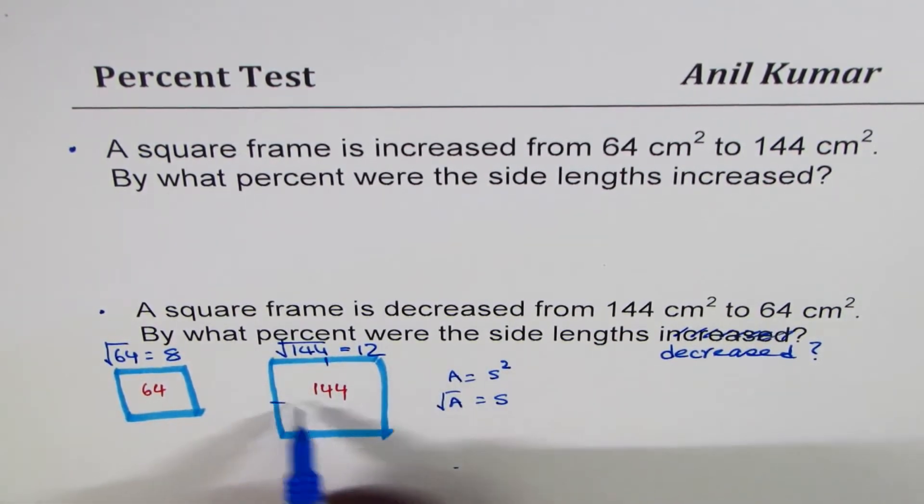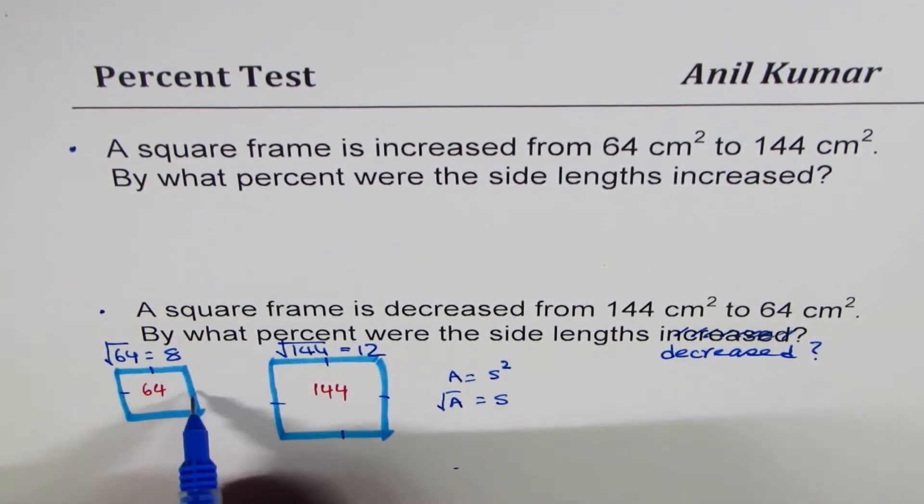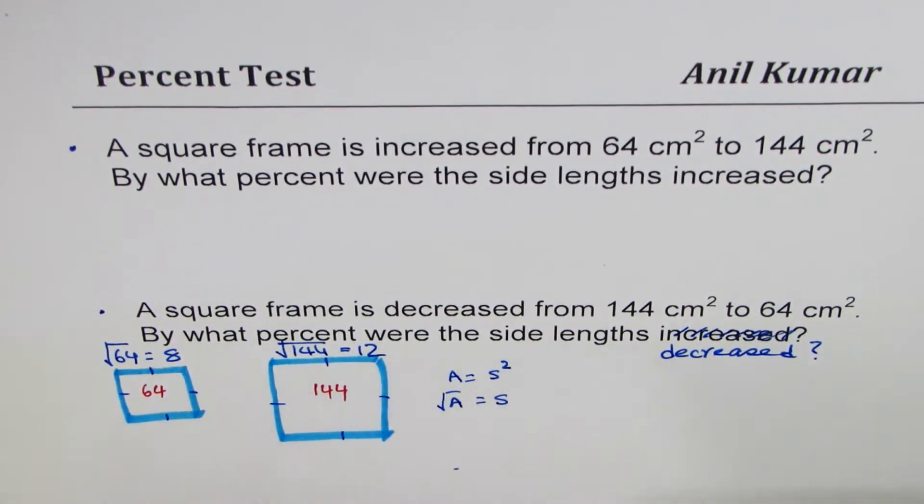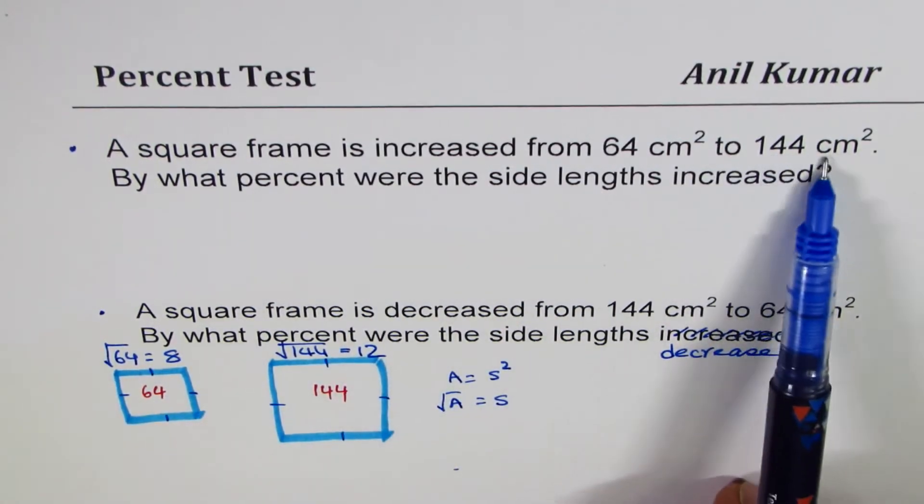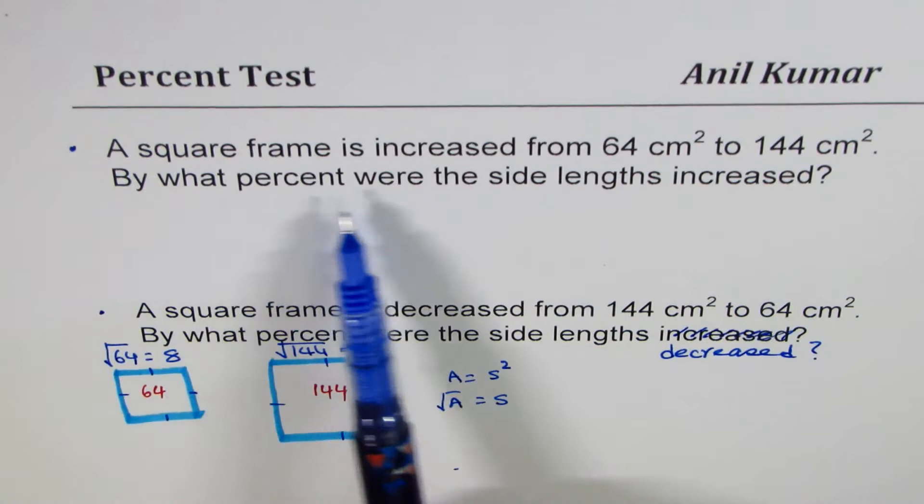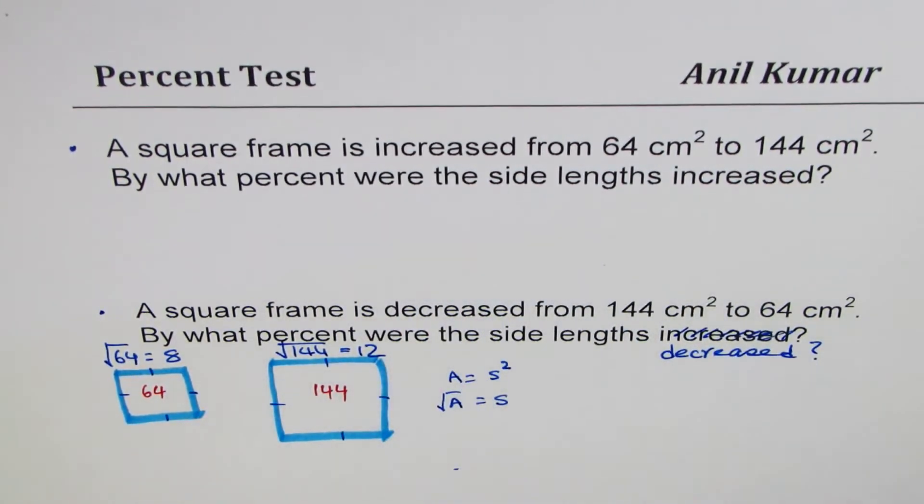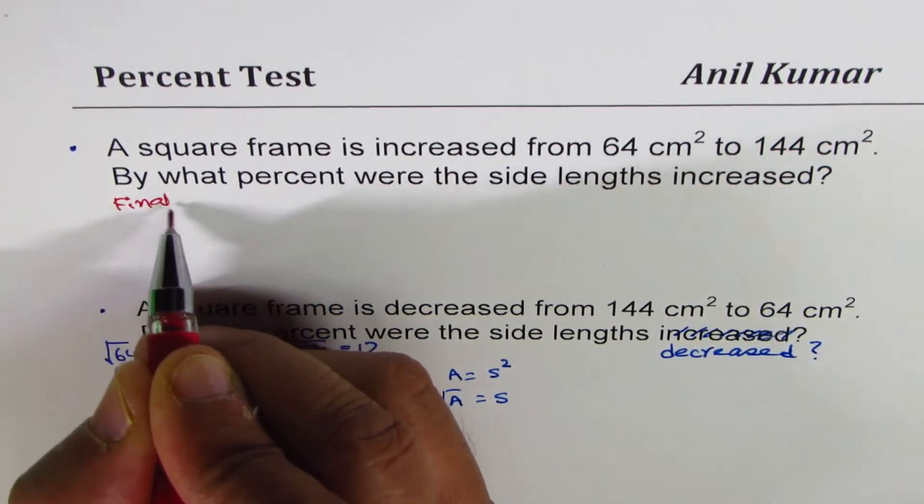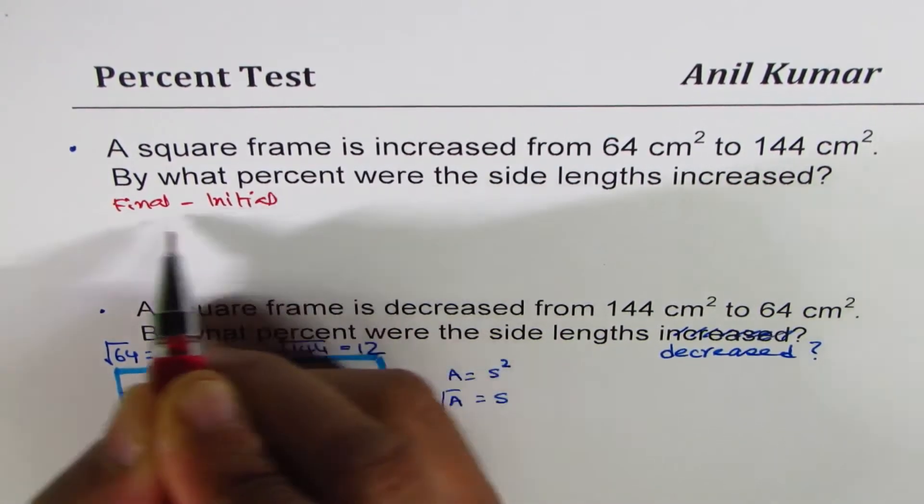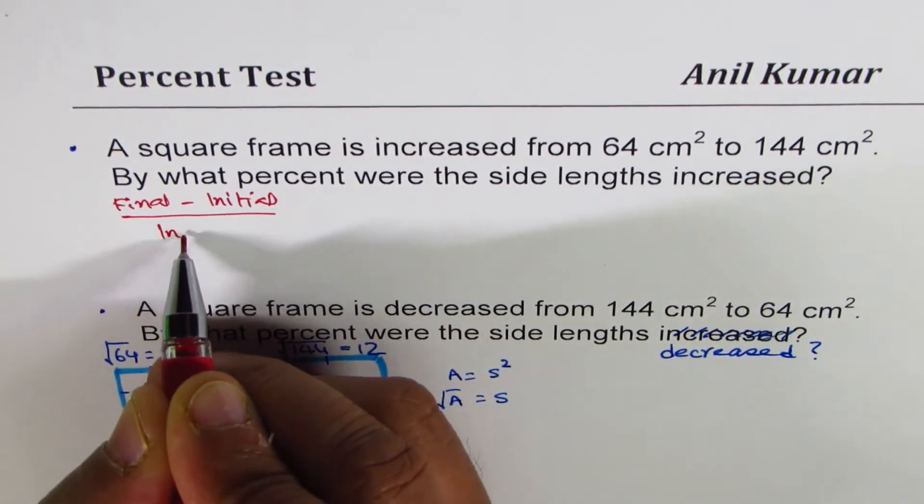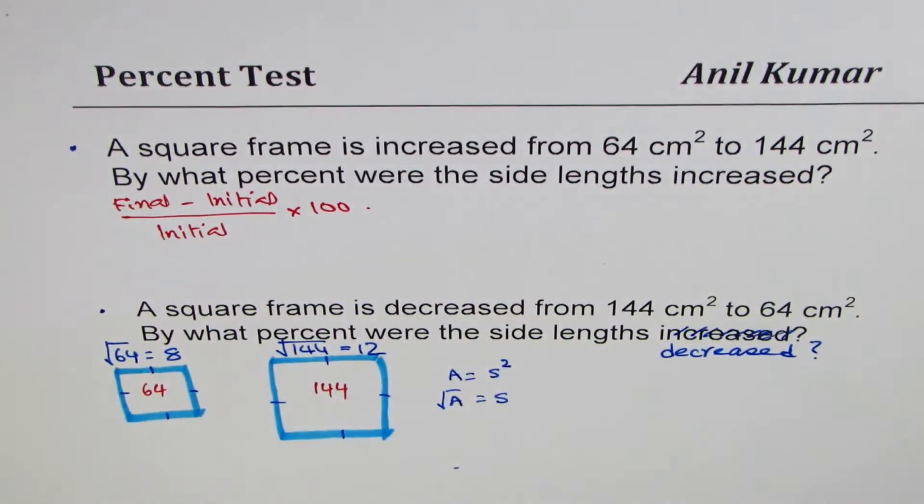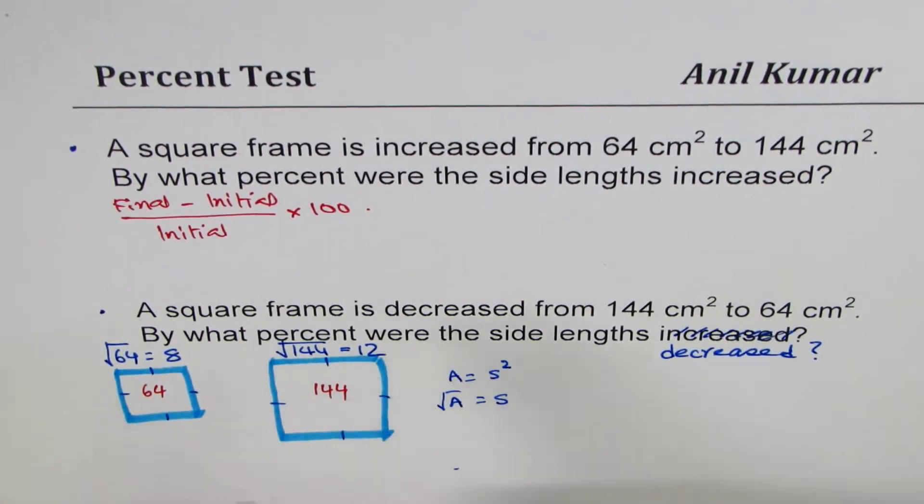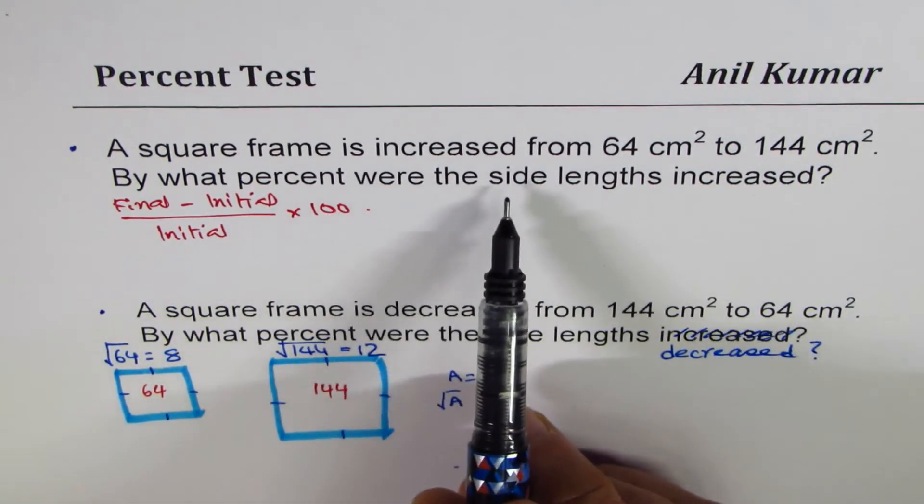Now let's read the question: a square frame is increased from 64 to 144 centimeter square. By what percent were the side lengths increased? So whenever you want to find percent increase, it is always final minus initial over initial - wherever you start from - times 100. That's the formula.